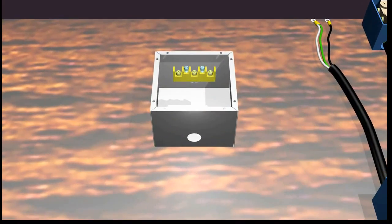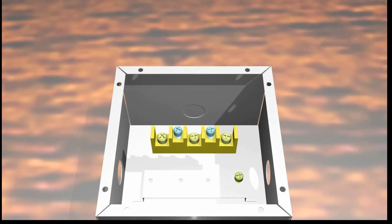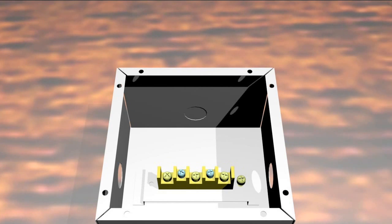First, fasten a terminal block inside a junction box. The terminal block is plastic designed to secure and insulate wire terminals.